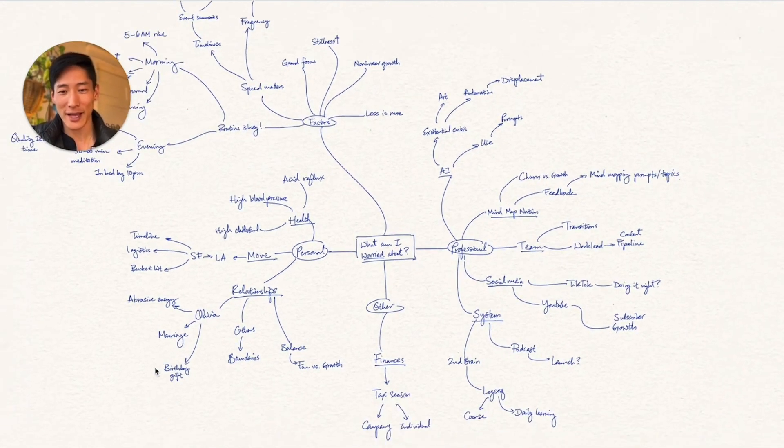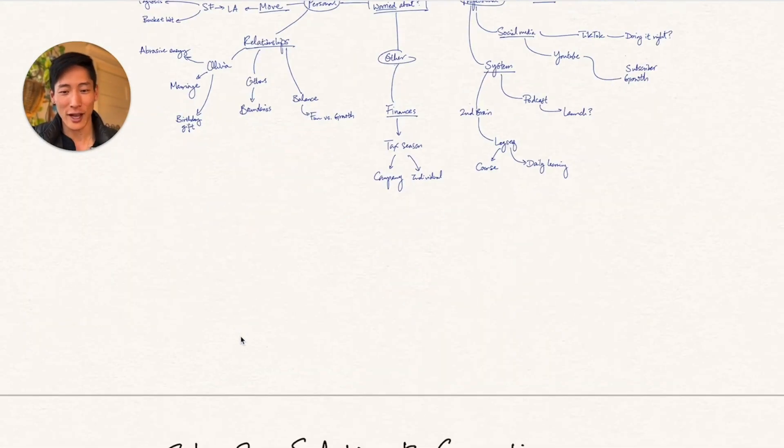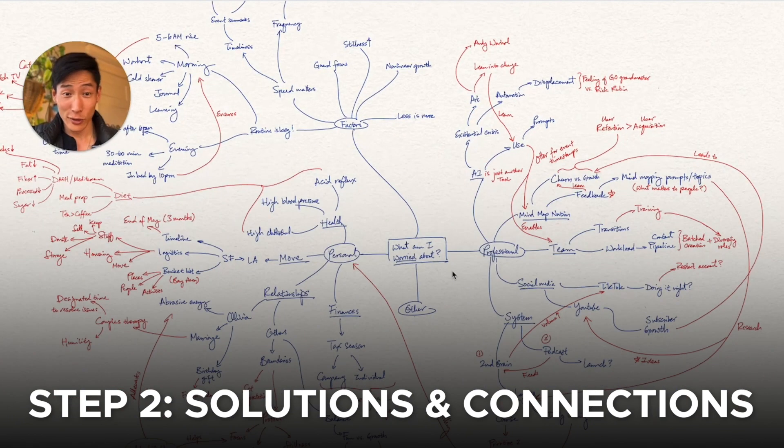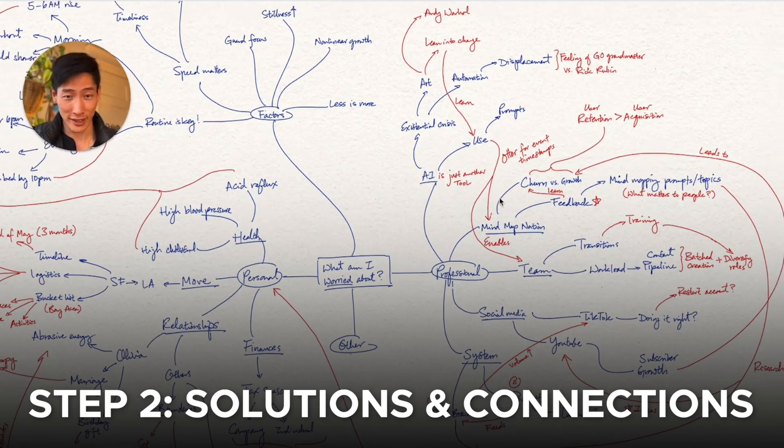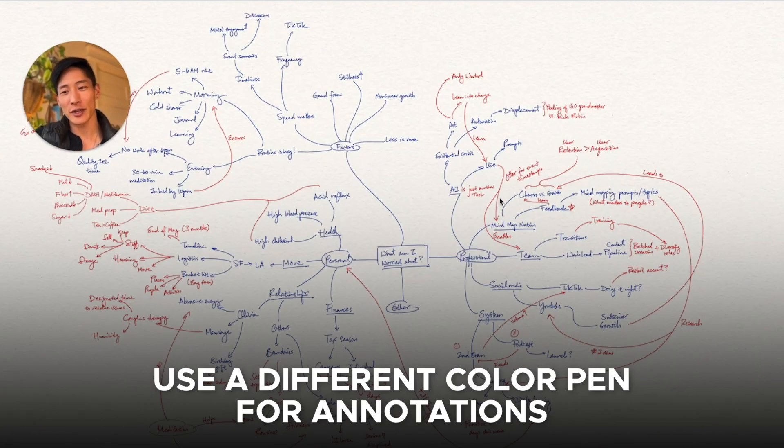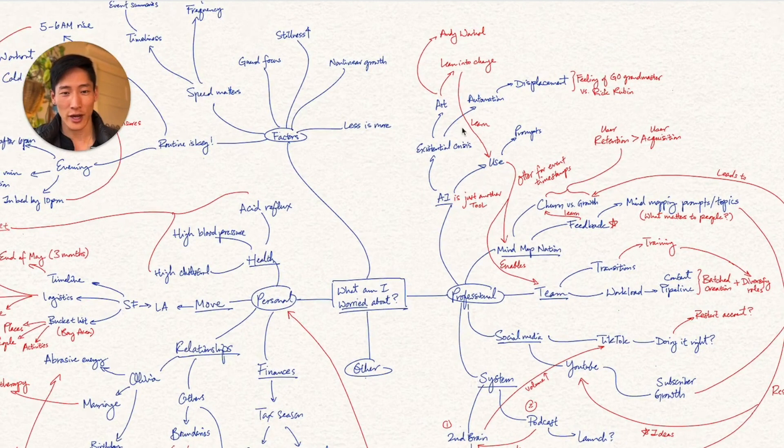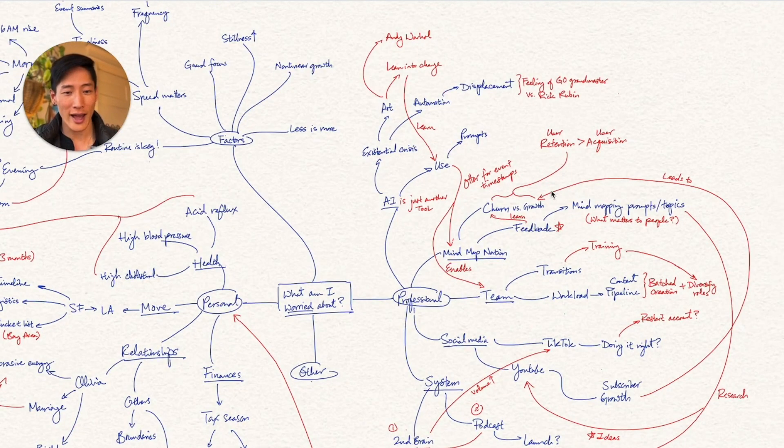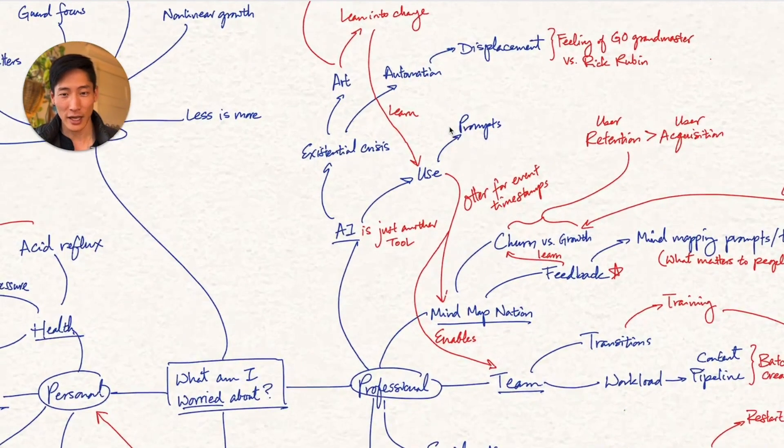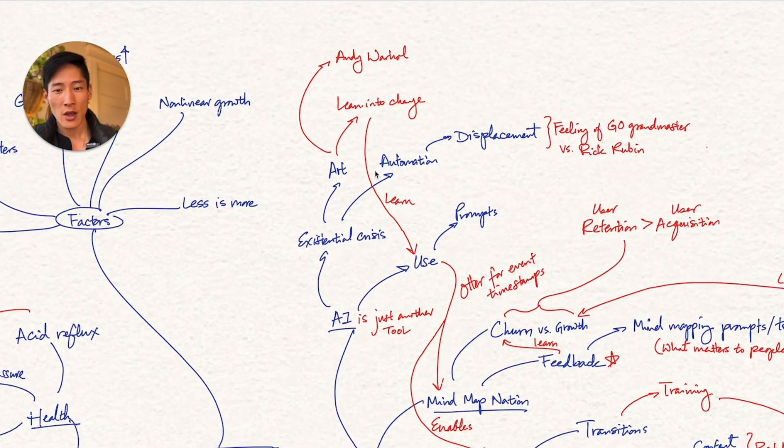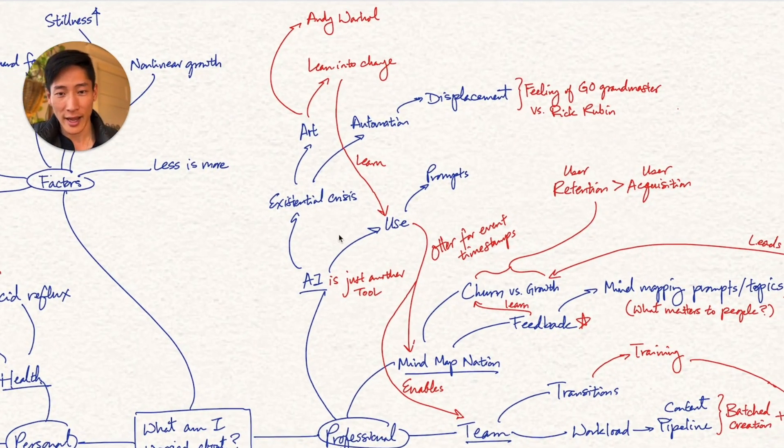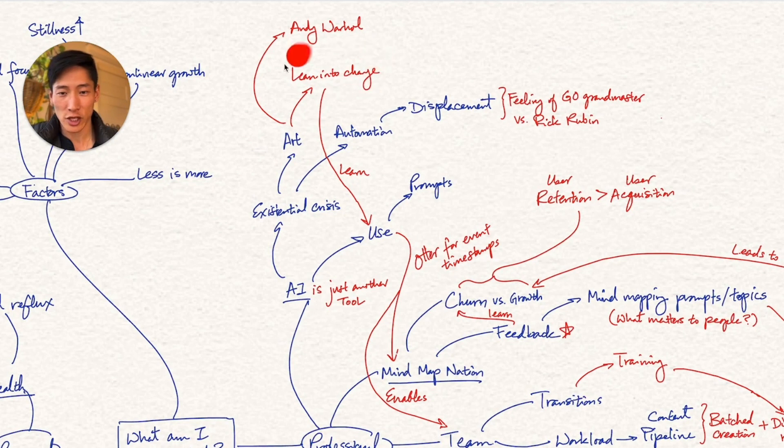Okay, so now that we've expanded all the different elements out, it's time to look at the different solutions and connections between these elements. I like using a different color in order to provide some more contrast to the mind map so that it doesn't just become a tangled mess. These are actually the solutions as well as the connections between elements. So let's dive in this one at a time just really quick. So for example, under AI, I actually put lean into change.